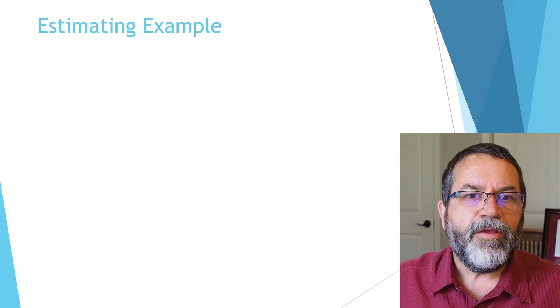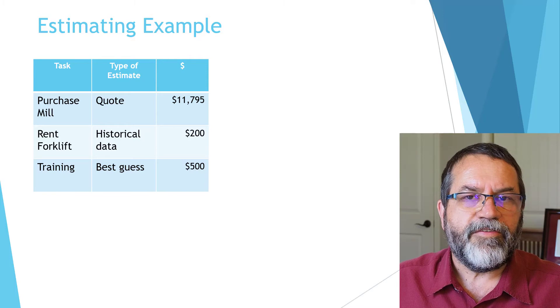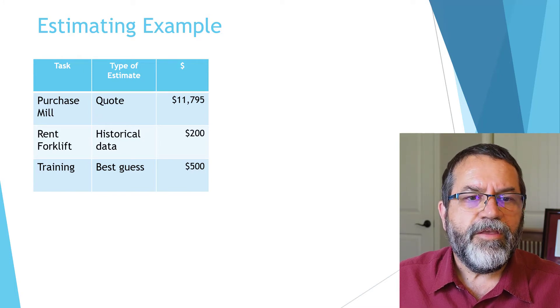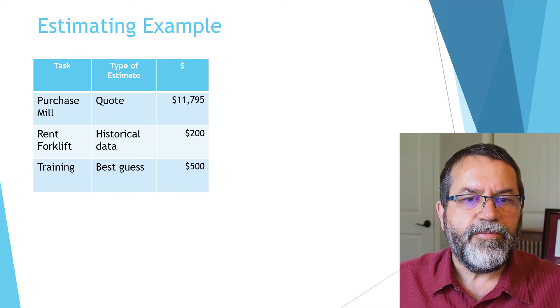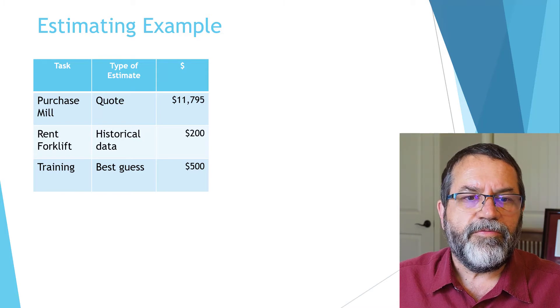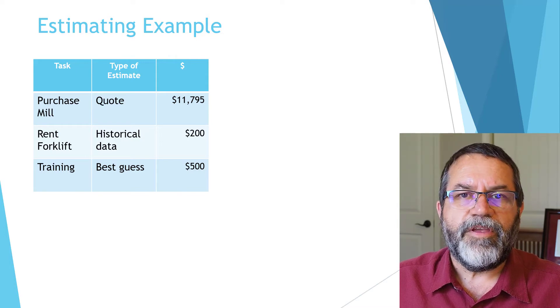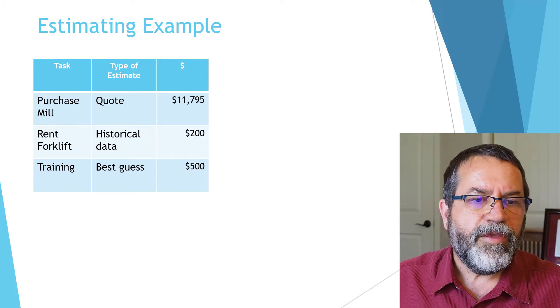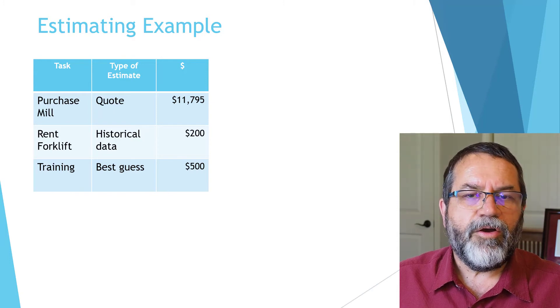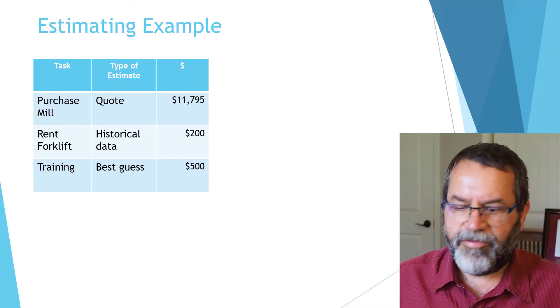Let's look at a simple example. This project has only three components: we're going to purchase a mill, rent a forklift, and do some training. I have three kinds of estimates. I have a quote from the vendor for the mill at $11,795. For renting the forklift, I've got historical data at $200. And for training, I don't have good information, so I'm taking a guess at $500.